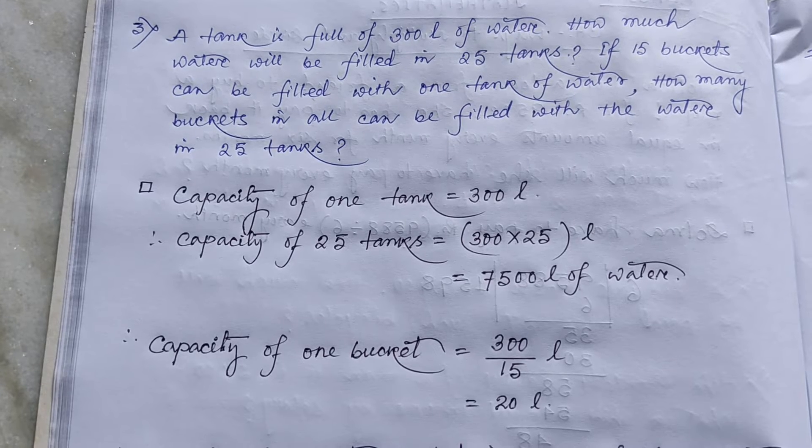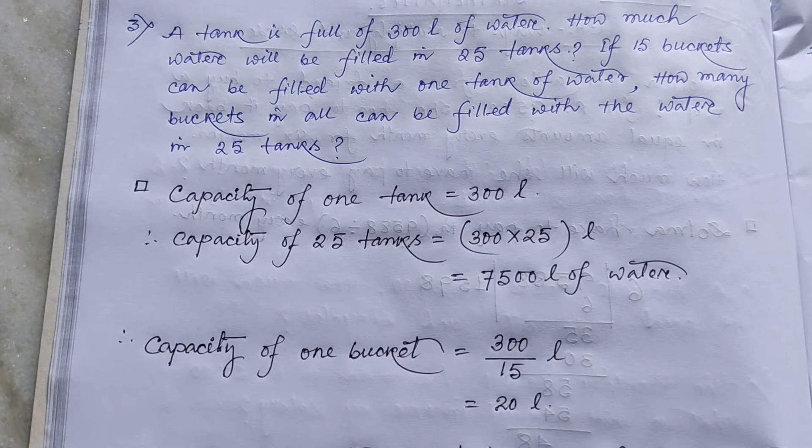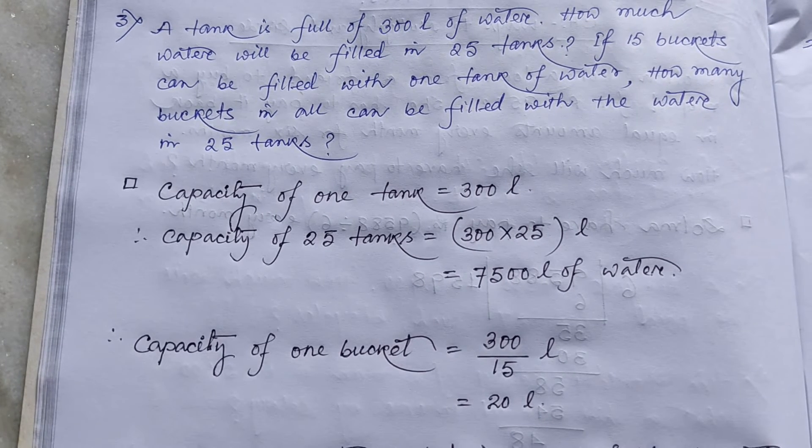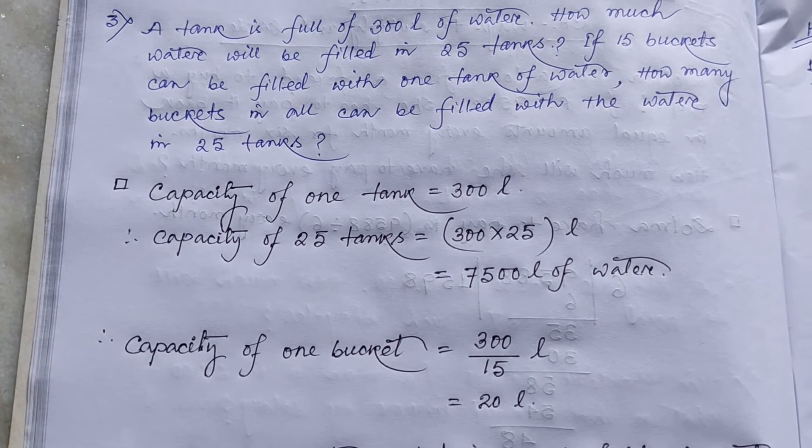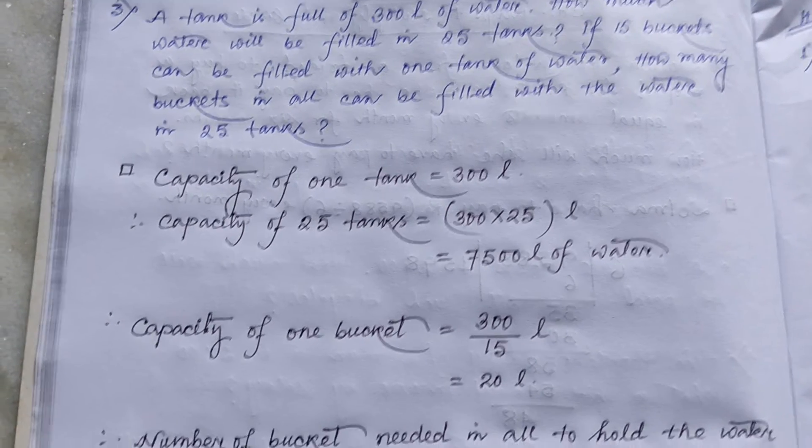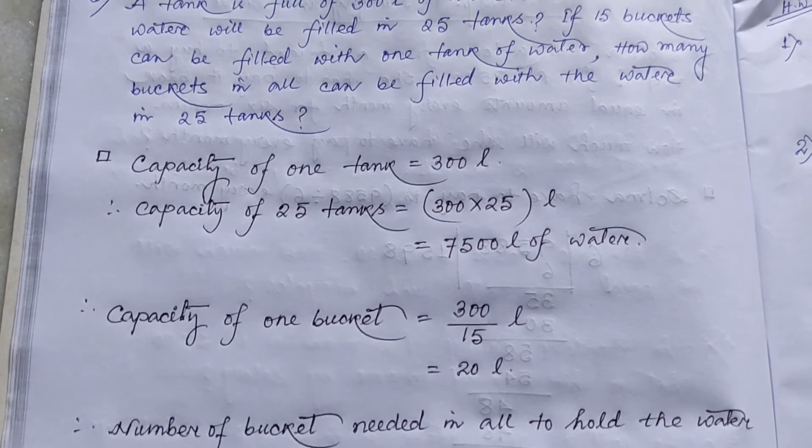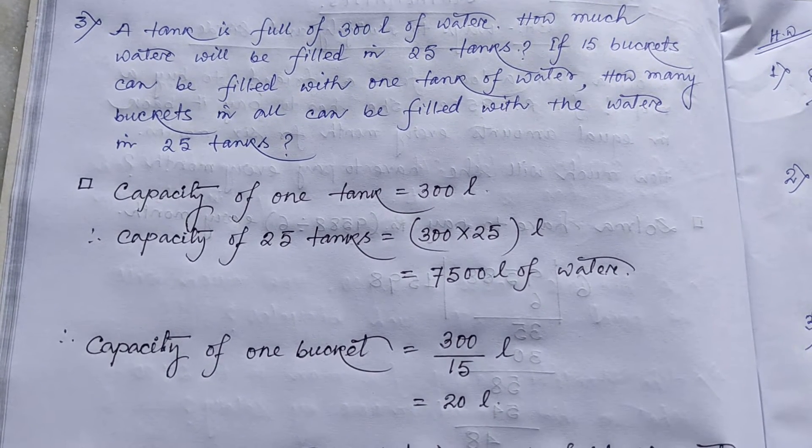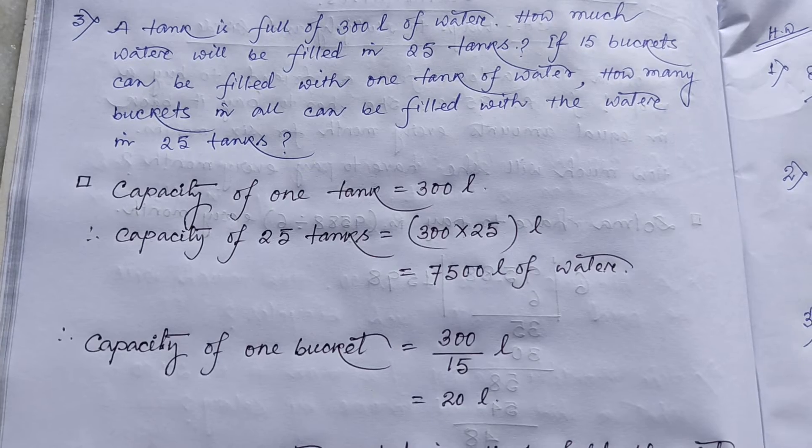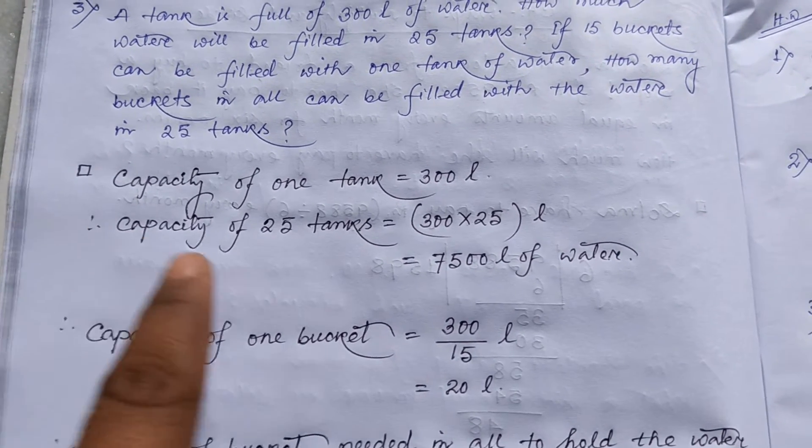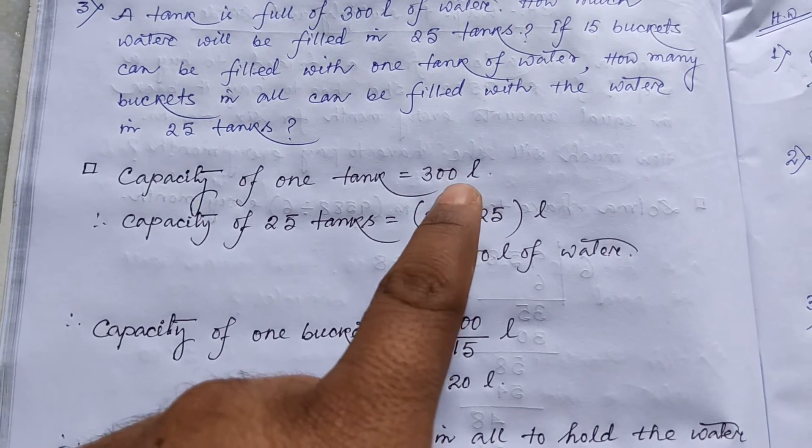How much water will be filled in 25 tanks? So here capacity of one tank is 300 liter. So capacity of 25 tanks is 300 into 25. If 15 buckets can be filled with 1 tank of water, how many buckets in all can be filled with the water in 25 tanks? So first part, a tank is full of 300 liter of water. How much water will be filled in 25 tanks?